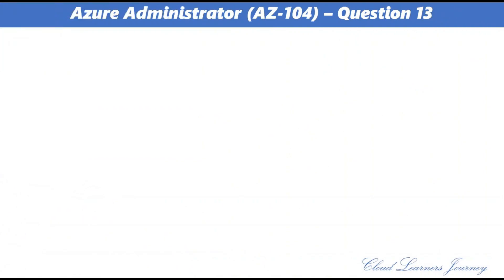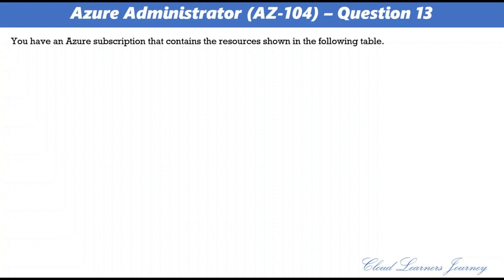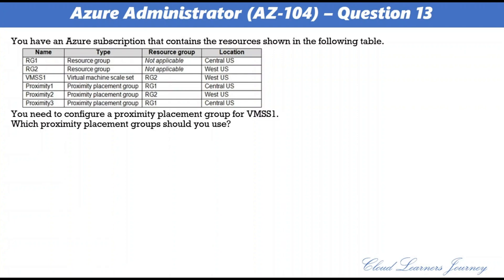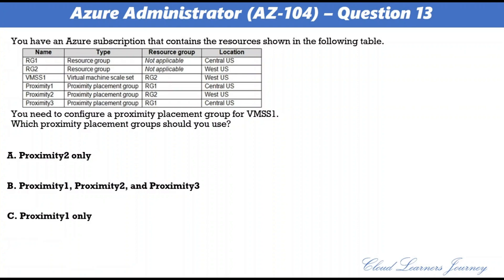Question 13. You have an Azure subscription containing resource groups RG1 and RG2 (with VMs, SS1, Proximity1, Proximity2, and Proximity3 in various resource groups and locations). You need to configure a proximity placement group for VMSS1, which is a virtual machine scale set. Options: A: Proximity2 only, B: Proximity1, Proximity2, and Proximity3, C: Proximity1 only, D: Proximity1 and Proximity3 only. The correct answer is A: Proximity2 only.